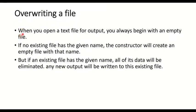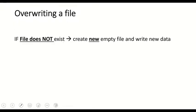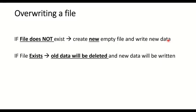One important note: whenever we open a text file for output we always begin with an empty file. If no file with the given name exists, the constructor creates a new empty file with that name. But if a file with that name already exists, all existing data will be eliminated and new output will be written to that file — so the old data is not kept.